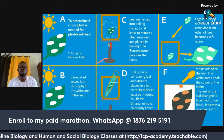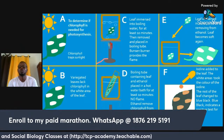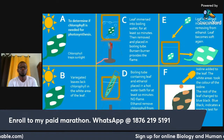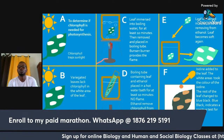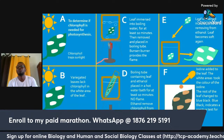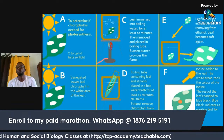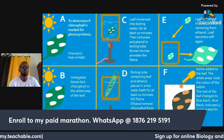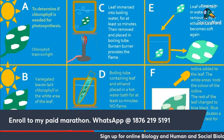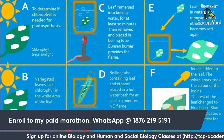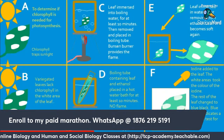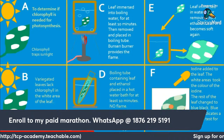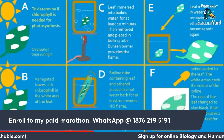Section D: the boiling tube containing the leaf and ethanol is placed in a hot water bath for at least 10 minutes — no flame is required for this step. Ethanol removes chlorophyll from the leaf, leaving the leaf crispy and with a lighter color. Section E: the leaf is immersed in water after removing from ethanol; the leaf becomes soft again. Section F: iodine is added to the leaf. The white areas took the red-brown color of iodine; the rest of the leaf turned blue-black. Blue-black indicates a positive test for starch.